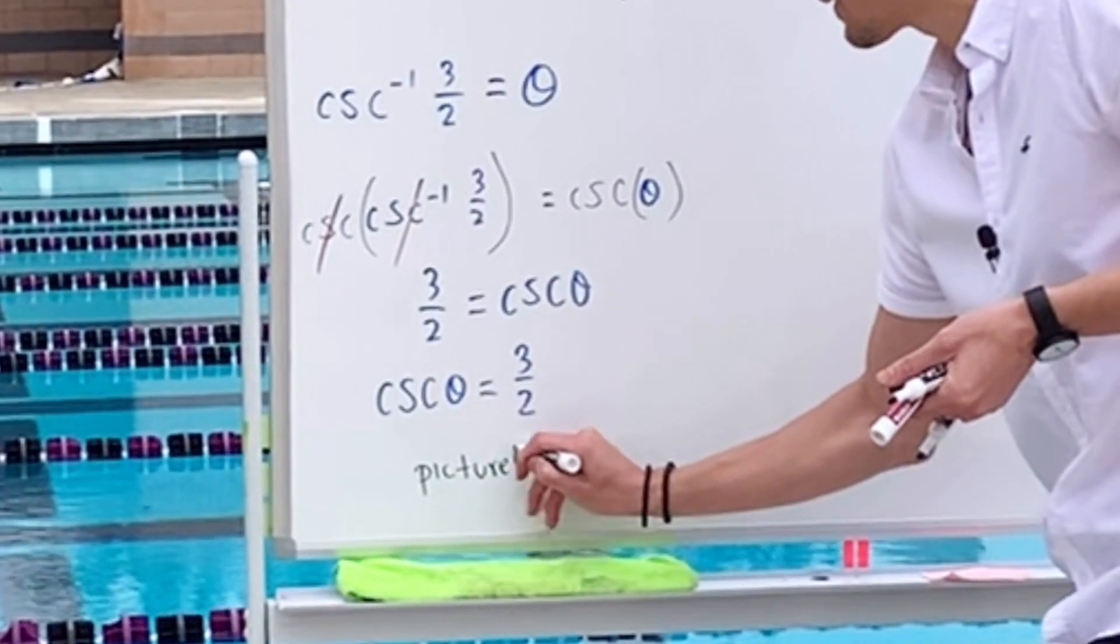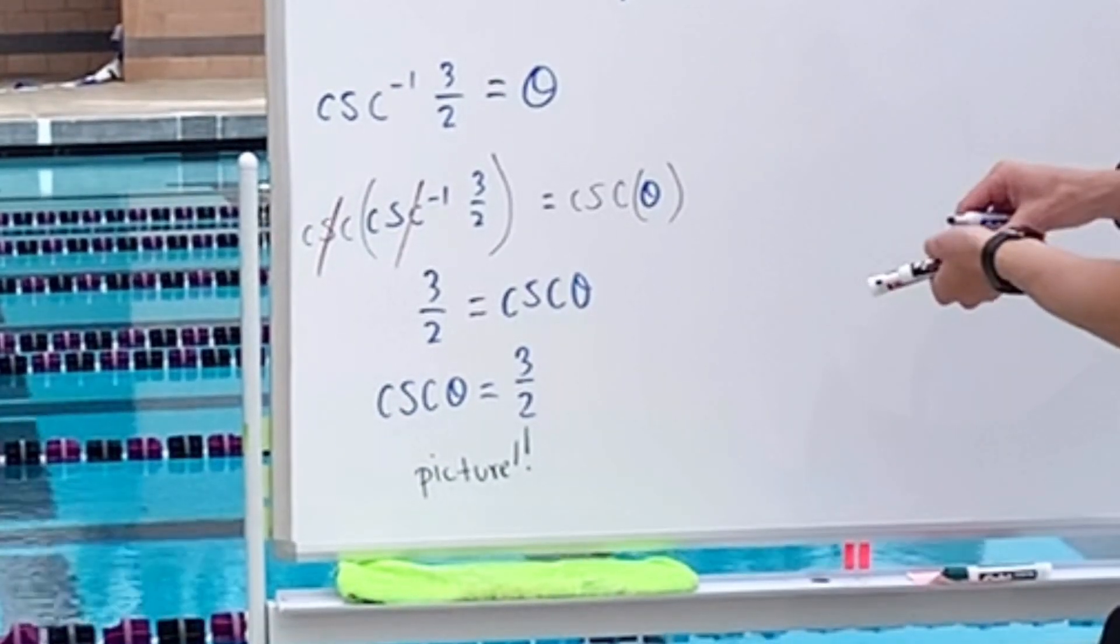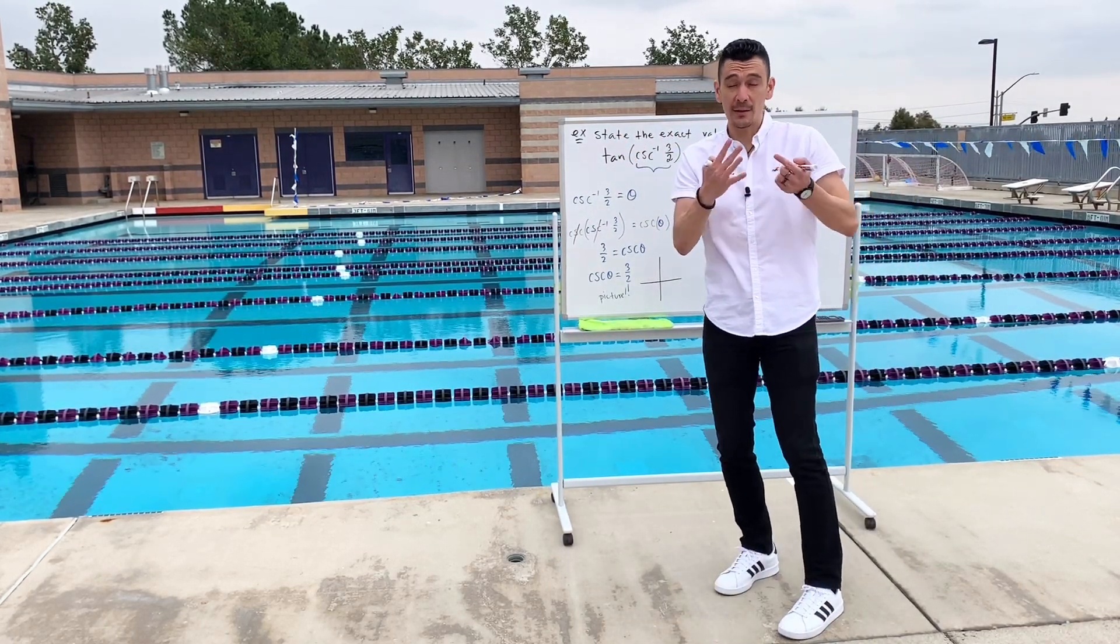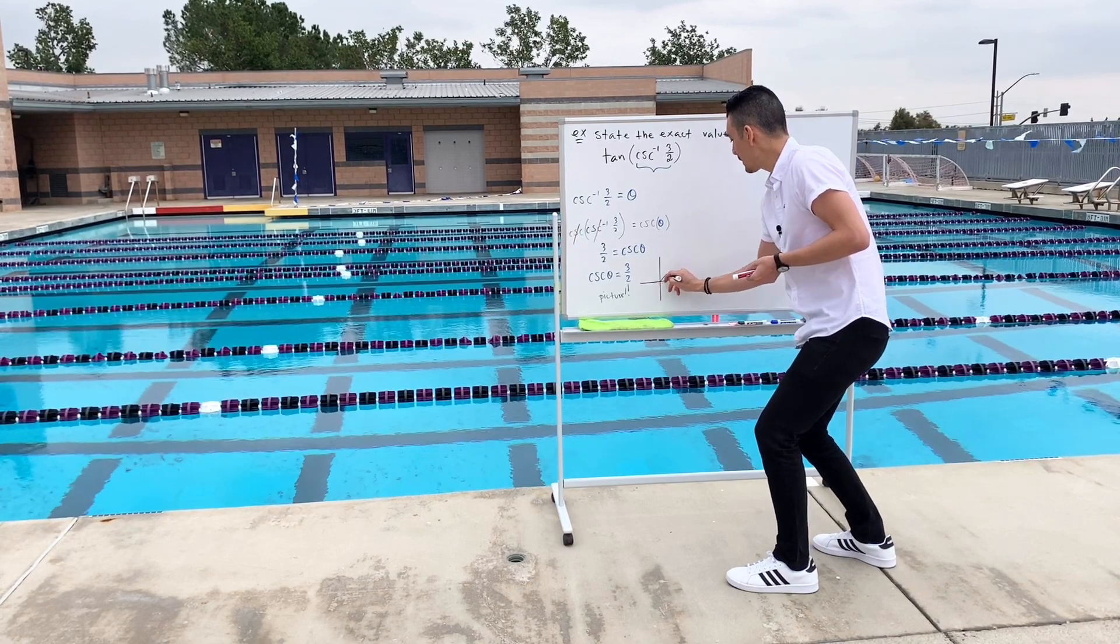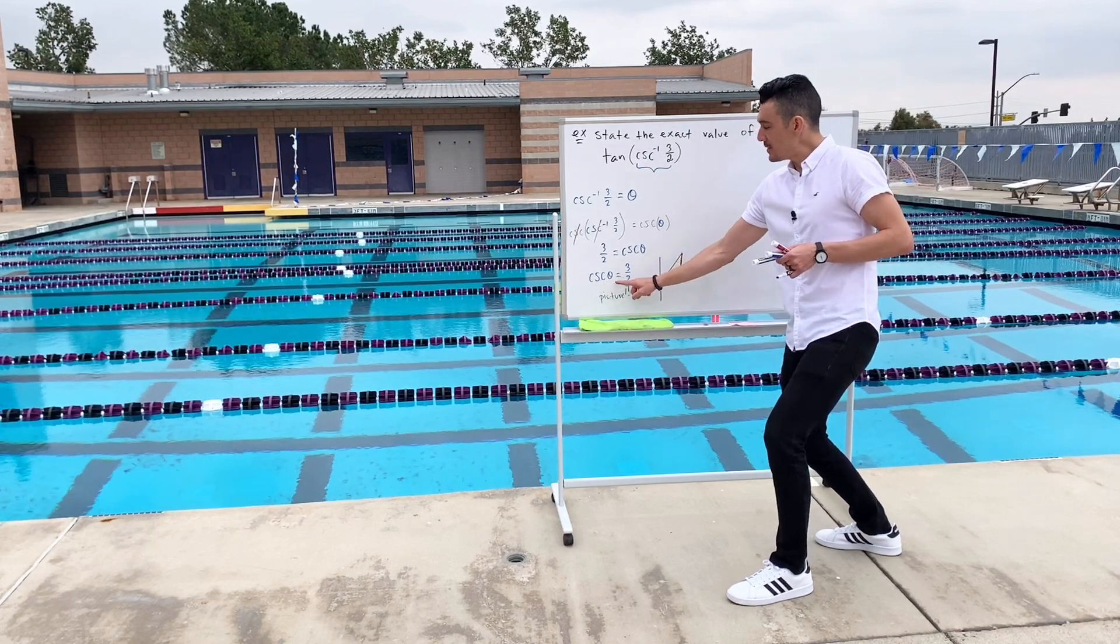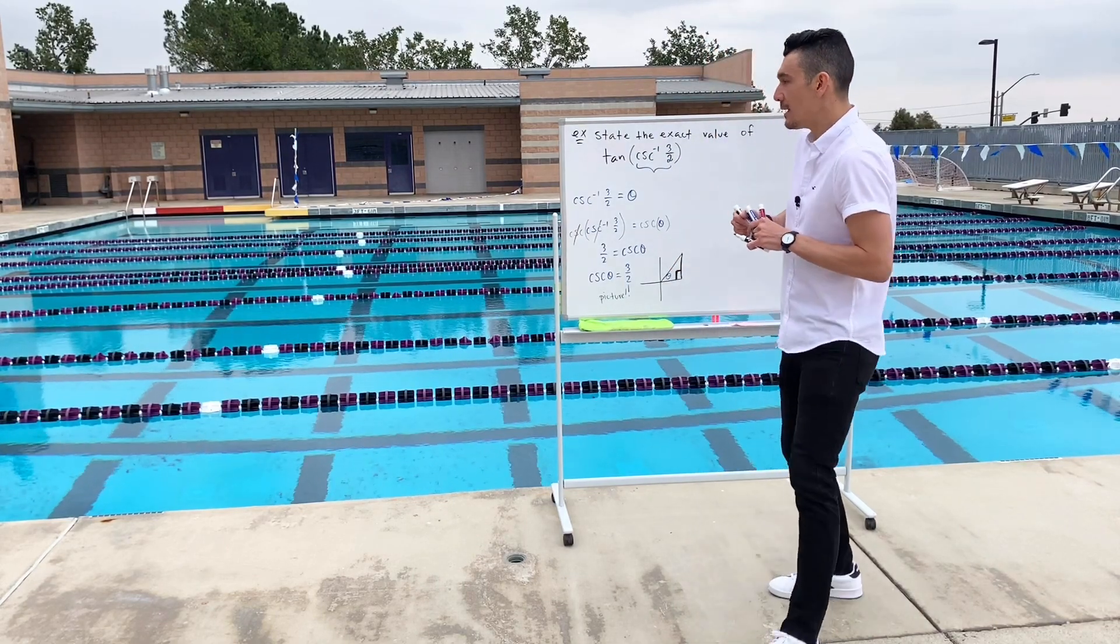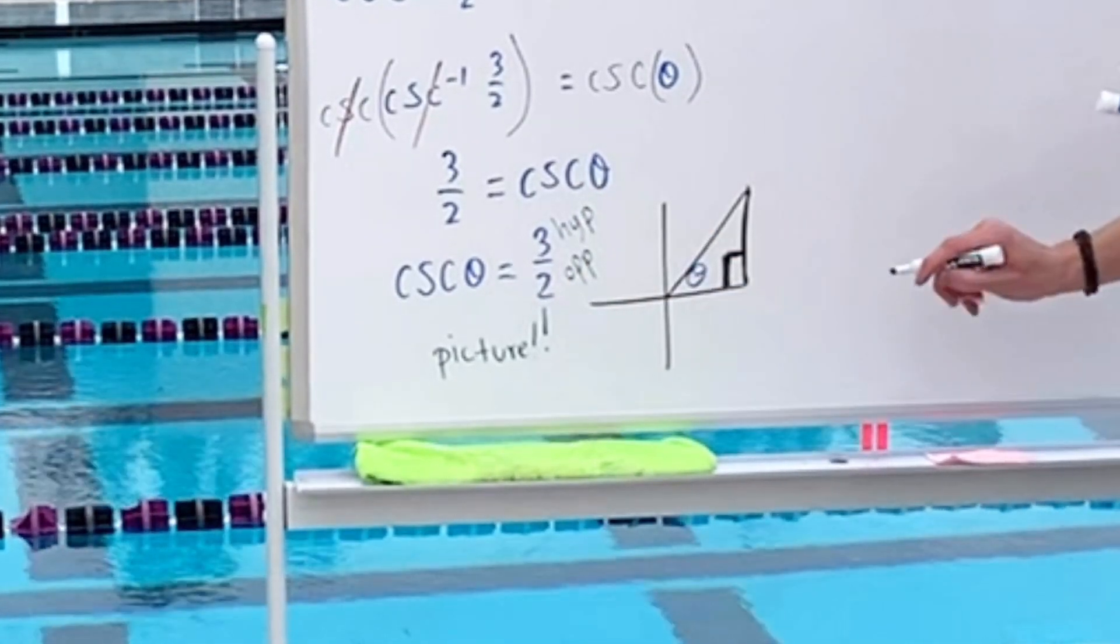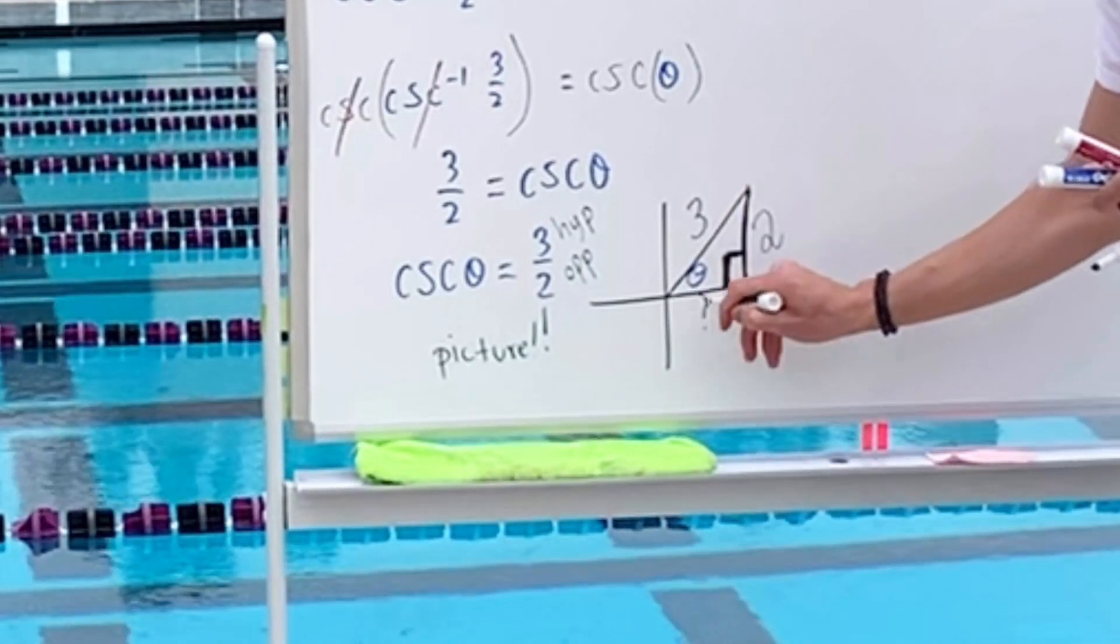This gives me the ability to make a picture. So why don't we go to the x and y axis real fast? Now what quadrant should we go to? Well, the directions don't say anything about a particular quadrant. So anytime that's the case, just go to quadrant number one. Always go to quadrant one if they don't tell you where to go. So here's our triangle. And we discovered that cosecant theta equals three over two. But what exactly does cosecant equal? Cosecant equals hypotenuse over opposite. So your opposite is two. Your hypotenuse is three. And now let's find the question mark.